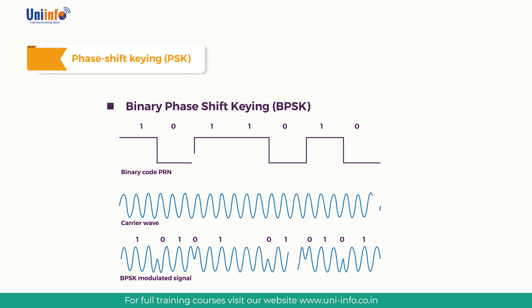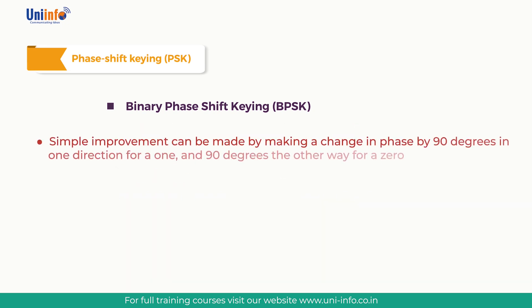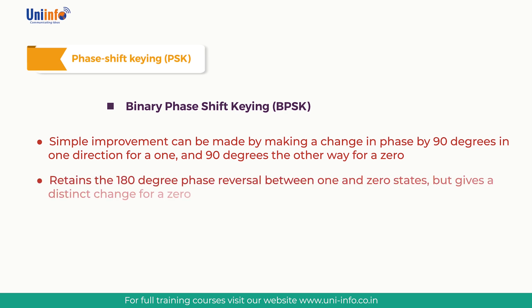Further improvements can be made on this basic system. One simple improvement is to make a phase change of 90 degrees in one direction for a one, and 90 degrees the other way for a zero. This retains the 180-degree phase reversal between one and zero states but gives a distinct change for a zero. In a basic system without this process, it may be possible to lose synchronization if a long series of zeros are sent, because the phase will not change state.